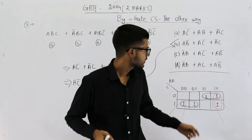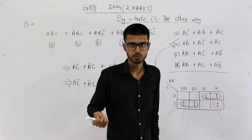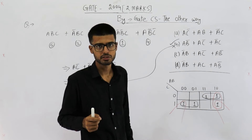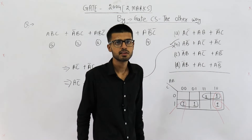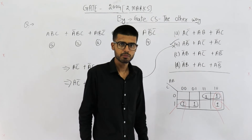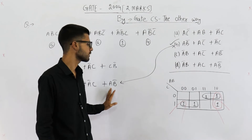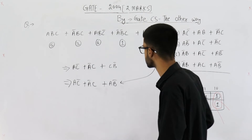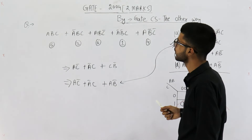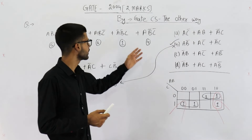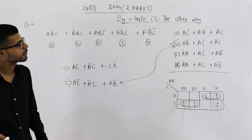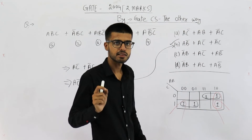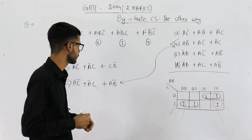Note that there are multiple ways to solve such questions. It's not necessary that whatever they have written in option B is the minimal form — they are just asking which option is equivalent. Even though I used a K-map here, it's not always guaranteed that the K-map result will be present in the options. You can also use Boolean laws to minimize the expression, or you can expand each option into canonical SOP form — that's guaranteed to give the correct answer.